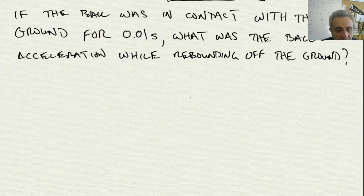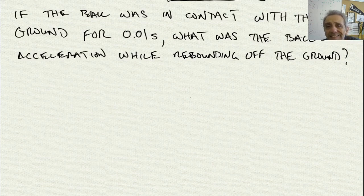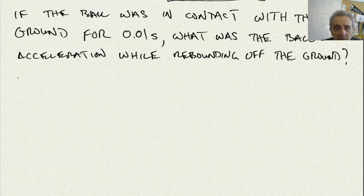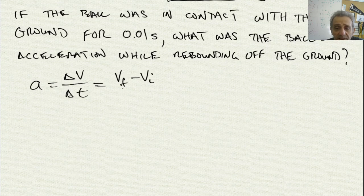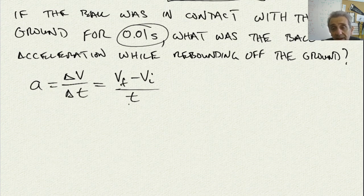The next question. If the ball was in contact with the ground for 0.01 seconds, which is 1 one-hundredth of a second, what was the ball's acceleration while rebounding off the ground? So, let's go back to the original definition of acceleration, which is delta V over delta T. This is the rate of change of velocity with respect to time. Now, we can write down, change. This is delta, remember, is final minus initial. And, the time is the elapsed time. And, that's given. That's here in the question. So, we know it's just 0.01 seconds. What we need to figure out now is, what's the final velocity and what's the initial velocity?